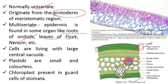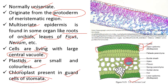The cells of epidermis are living cells and possess large central vacuoles. They contain plastids but these are colorless. Chloroplasts are present only in guard cells — the cells that form the stomata.